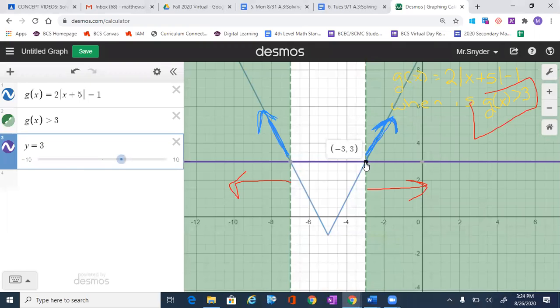The first intersection is at x equals negative 3, and then we also have the other intersection which is negative 7. I'm going to circle them. Negative 3 and negative 7.